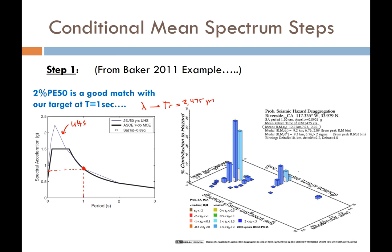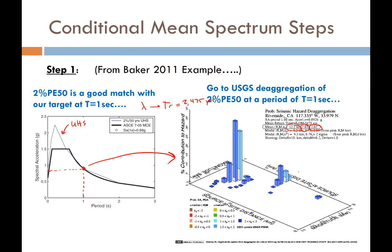Then at a period of one second for the return period of 2,475 years, take the de-aggregation from the USGS. Find the mean source-to-site distance, the mean moment magnitude, and the mean epsilon — the mean standard deviations for the attenuation relationships. Now I have those values and I'm going to hang on to them.